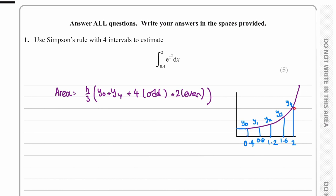You can see that y2 is when x equals 1.2, which is halfway between 0.4 and 2, and the odd values of y are here and here.